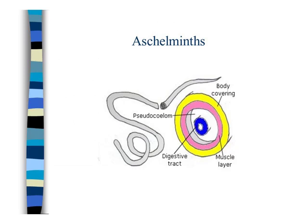Body covering: muscular layer, digestive layer — so the coelom is there. You can see that yellow is ectoderm, pink is mesoderm, blue is endoderm, and white is the pseudocoelom.